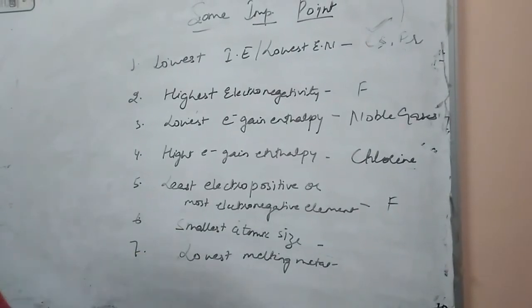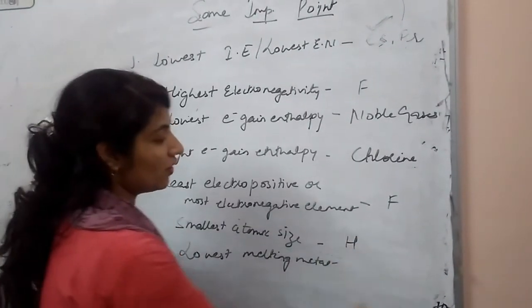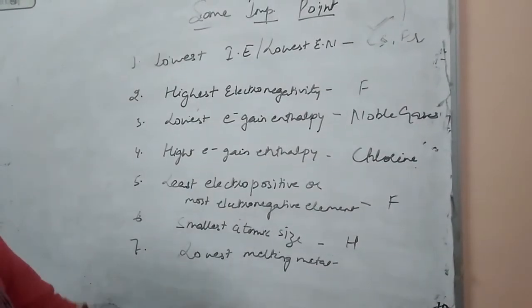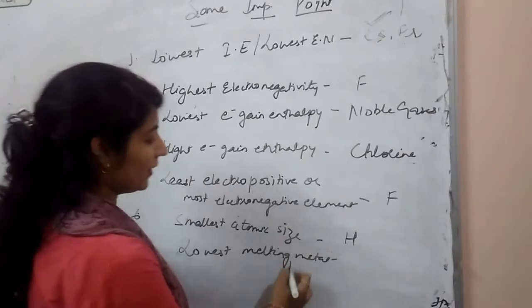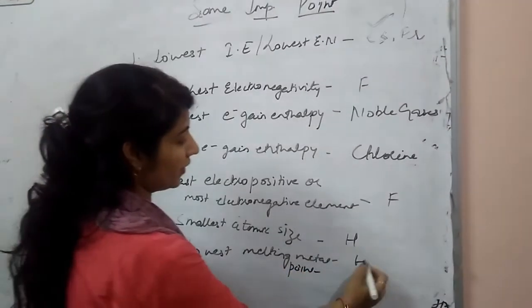Now next is smallest atomic size in the periodic table is of hydrogen atom. And the last one, lowest melting point metal is mercury.